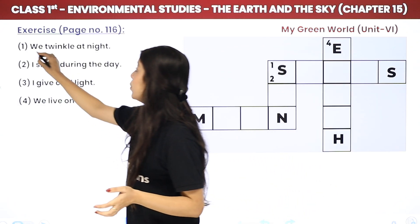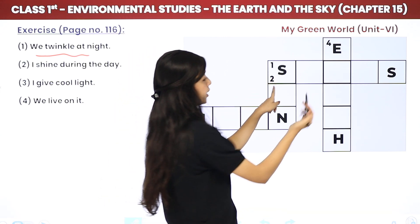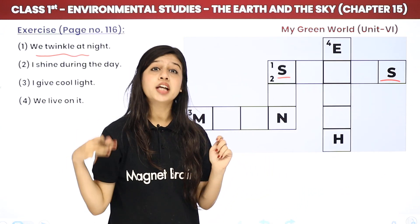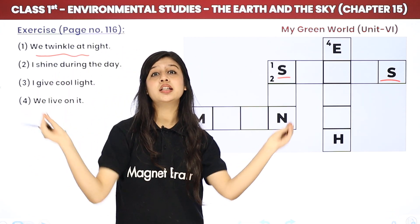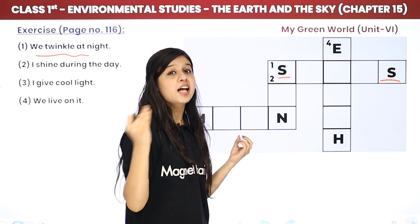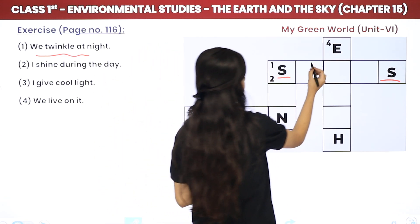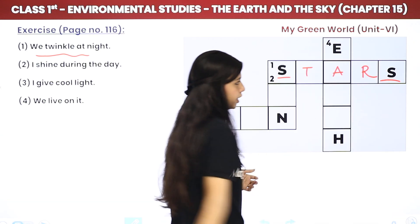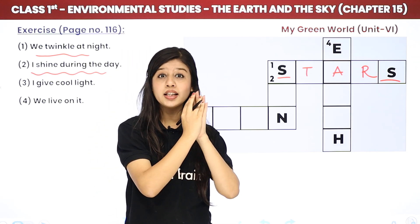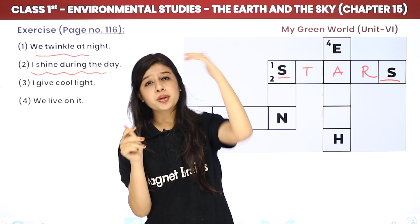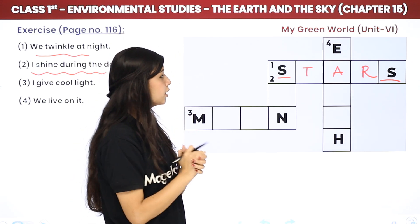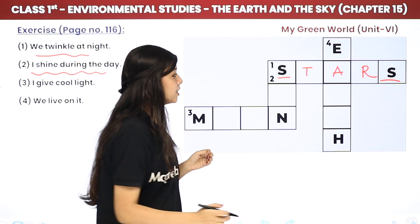Sabse pahle clue hai: 'twinkling at the night.' Is mein aapko do alphabets diye hain — S aur yahan pe bhi ek S — aur beech mein teen spaces khali hain. Toh woh cheez kya hai jo raat mein twinkle karti hai? Twinkle twinkle little star — yes, it's STARS! S-T-A-R-S. Clear. Next clue: 'I shine during the day.' Kaun si cheez hai jo sky mein shine karti hai din ke time pe — jis se aankhen chhoti ho jaati hain?